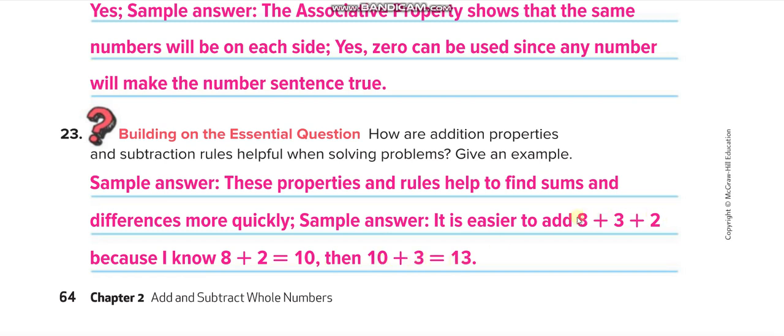Now it's easier for me because I know 8 plus 2 is equal to 10, and 10 plus 3 equals to 13. If I add it directly, 8 plus 3, 11, and 11 plus 2, 13. Same. To make it easier, I bring 2 here. Now I know easily 8 plus 2 is 10, and then 10 plus 3, 13.